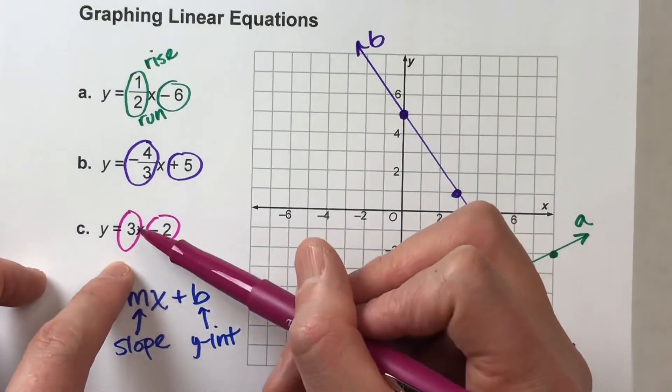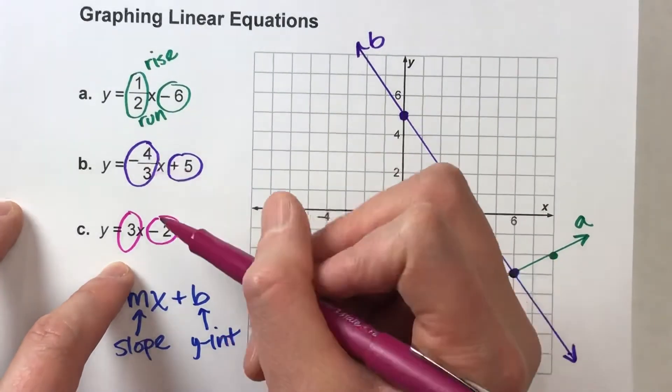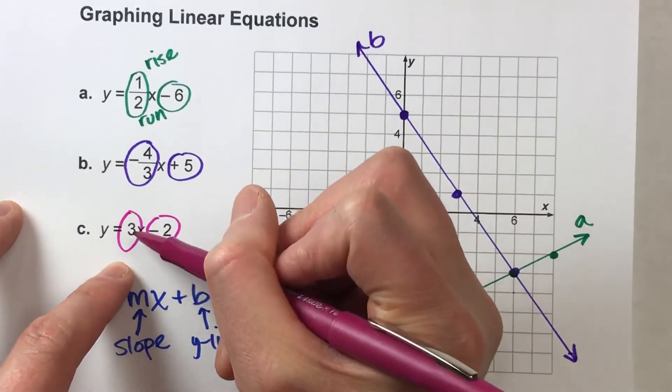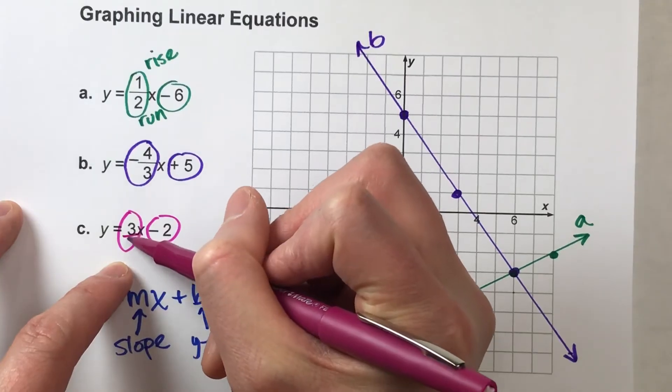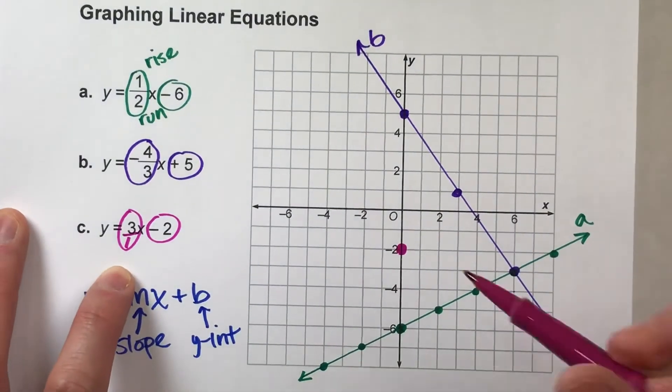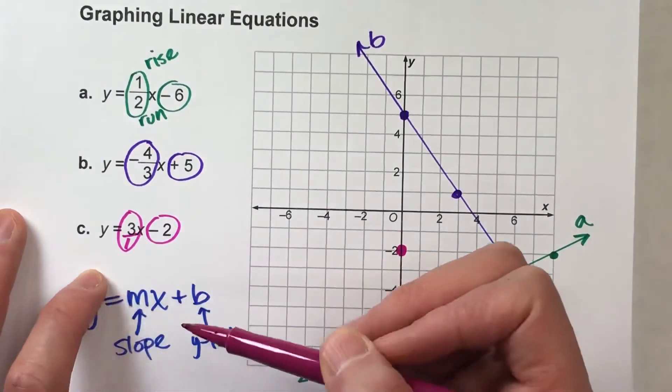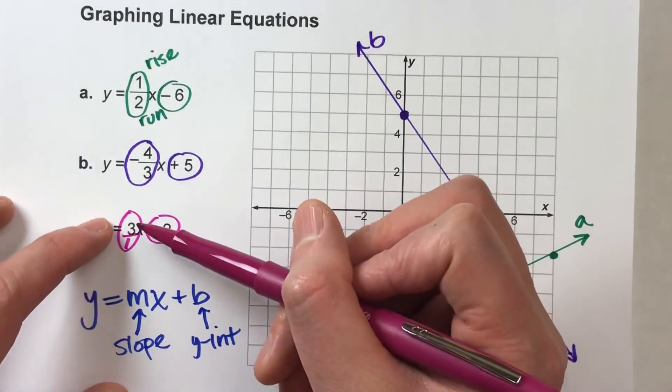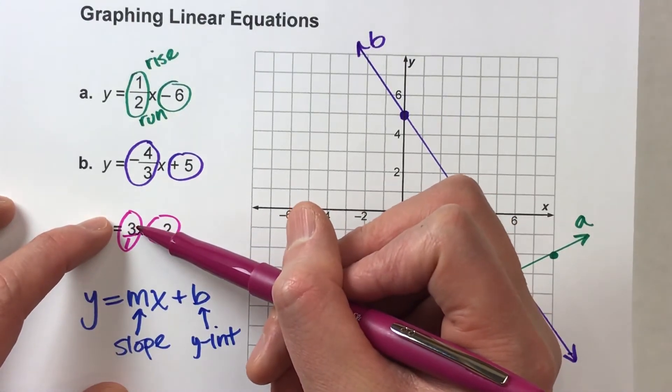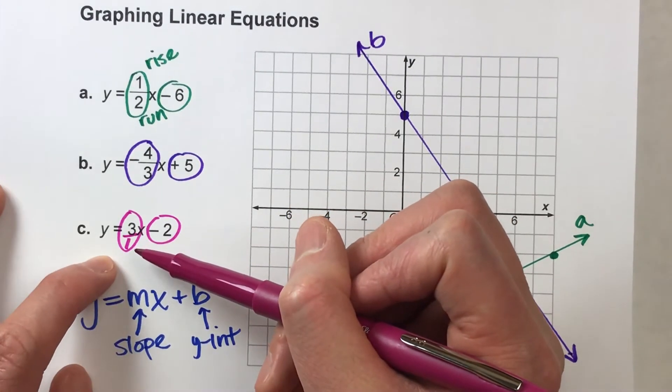Now, when your slope isn't a fraction, I try to make it into a fraction. So if it's a whole number, put it over 1 to make it into a fraction because it's easier to graph when you think of it as a fraction. Okay, because the top number is your rise, 3. Your bottom number is your run, 1.